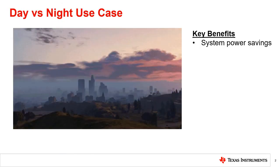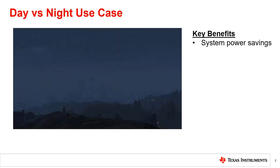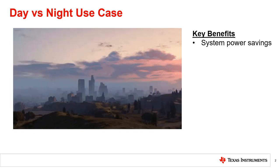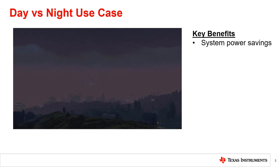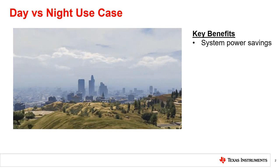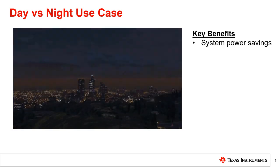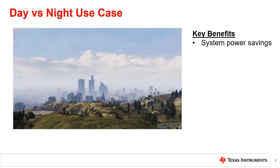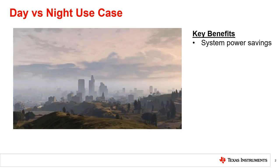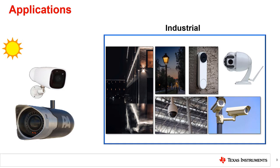A frequent use case for applications is to be able to tell when a light threshold is crossed. This is often used to determine whether it is daytime, with a high lux value of light in the environment, or nighttime, where there is a minimum amount of light. With an ambient light sensor, you are able to sense the amount of light and alert the application when it is time to change operation.